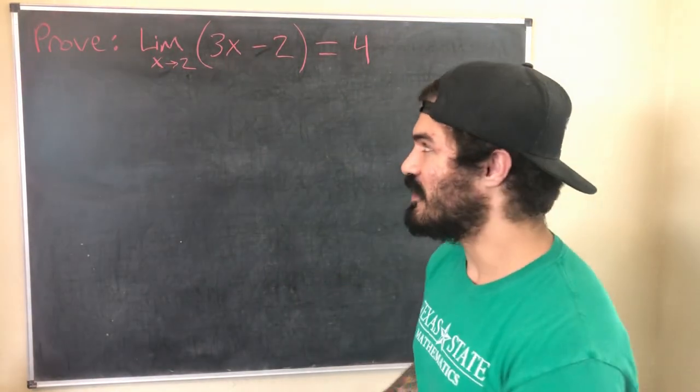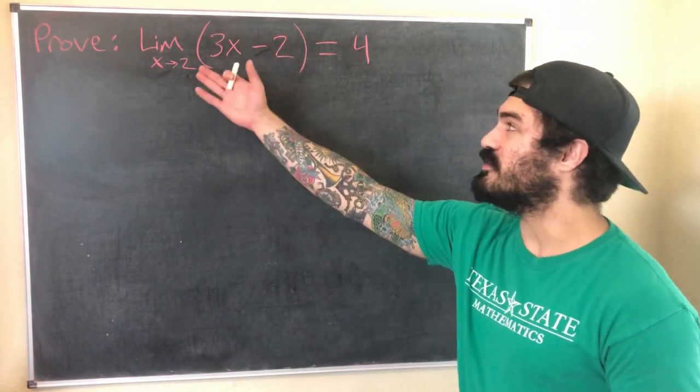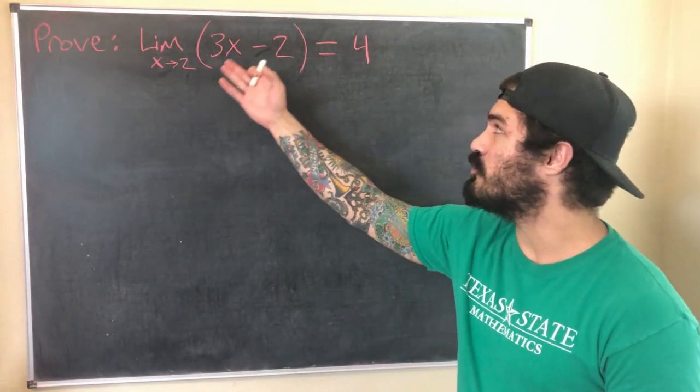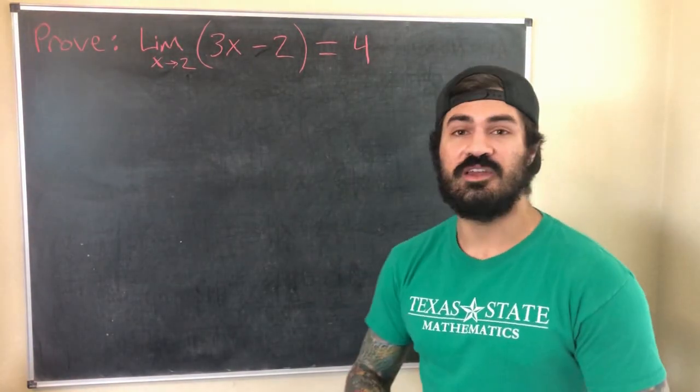And then my next video we'll do some quadratic functions which are a little bit more complicated. So let's go ahead and start with this first example. We're going to prove that the limit of 3x minus 2 as x approaches 2 equals 4.